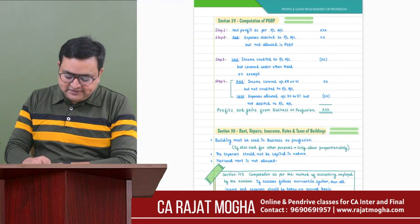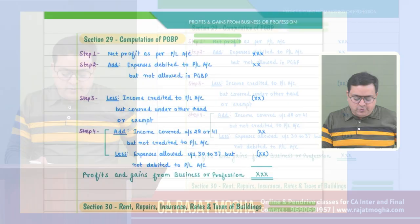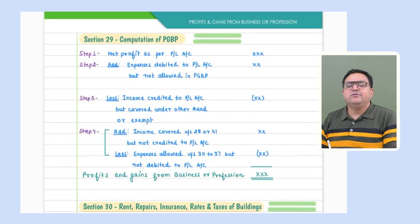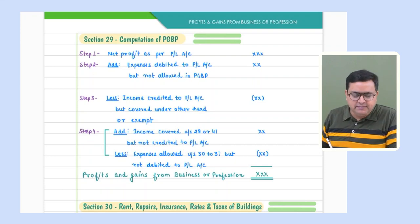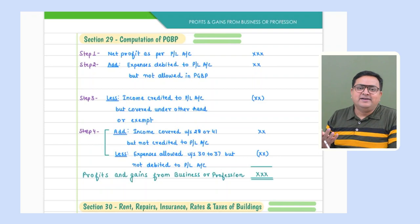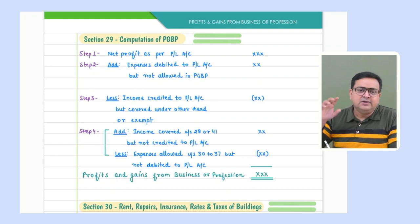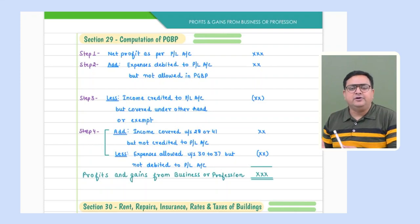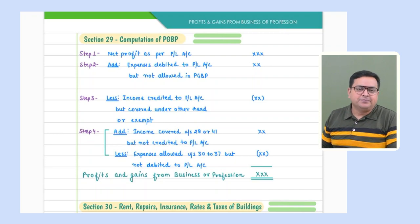So those are the important points covered under section 28 - if an assessee has these types of income, they will be taxed as PGBP. Now let's move to section 29 - computation of PGBP income. How do we compute PGBP income? This is a very important section, especially because it will help you deal with the first question in your examination regarding total income, where most things are related to PGBP.